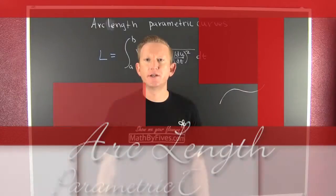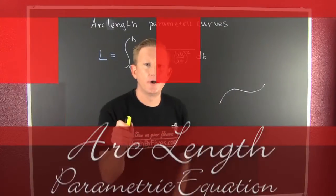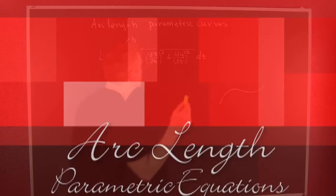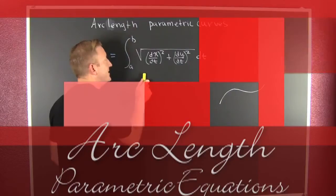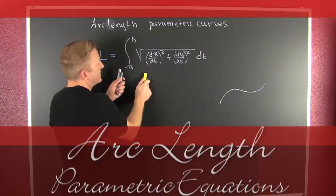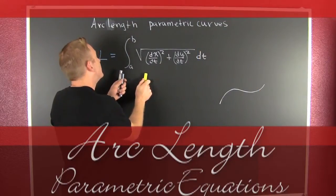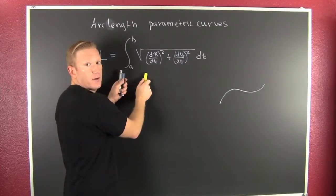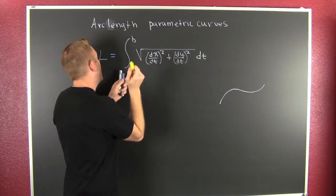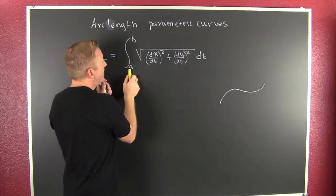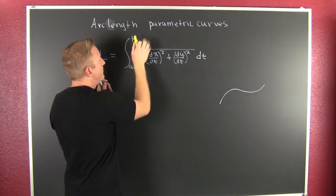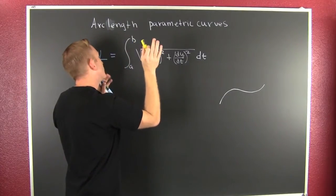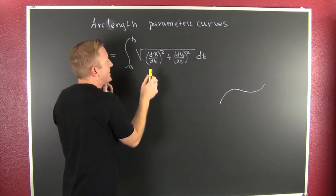Finding the arc length of parametric curves. Here's the idea. This is the formula for finding arc length of parametric curves, and we're looking for the integral from a to b — because what does the integral do? It adds things up.